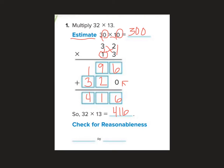And then I'm going to check for reasonableness, so my estimate was 300, my actual answer was 416. Is it reasonable? Yes. Is it exact? No, but is it close? Yes. So there we have it. Thank you for watching and we'll see you tomorrow.